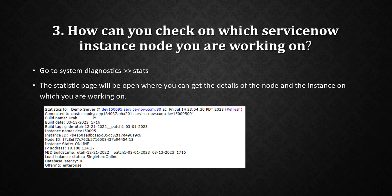As a shortcut, in the filter navigator just type stats.do and it will open the stats page. You will get all the details like node version and whatever other details are needed, you can provide them from there as well.